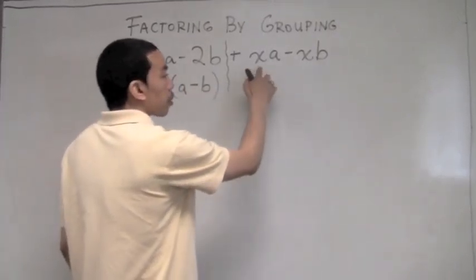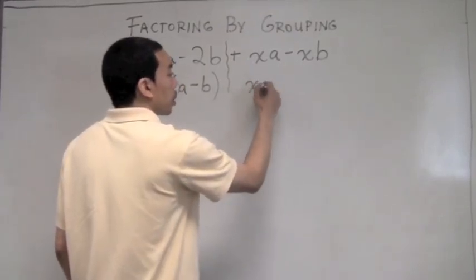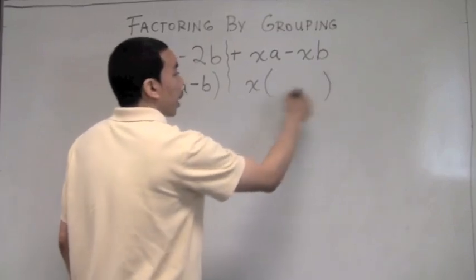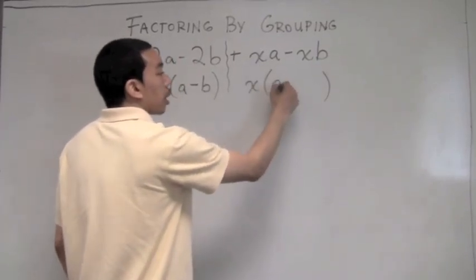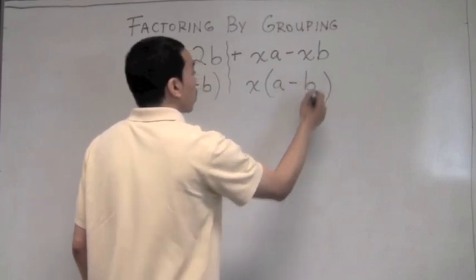Next, I factor out the GCF of xa and xb. x is the GCF. x goes into xa, a times. x goes into xb, negative b times.